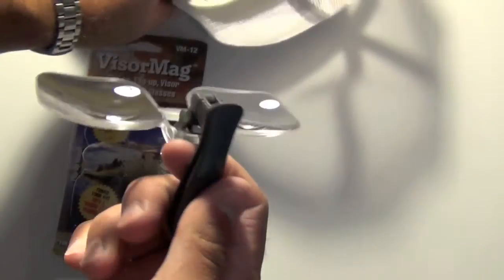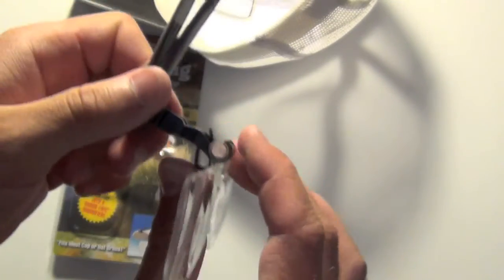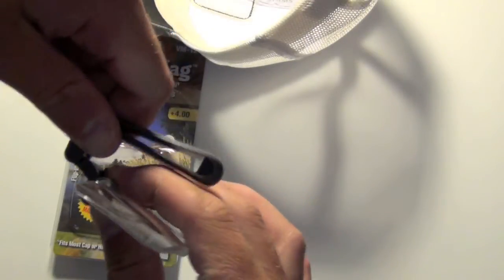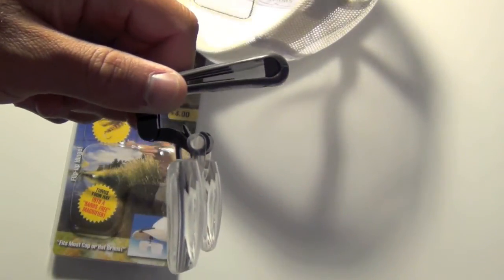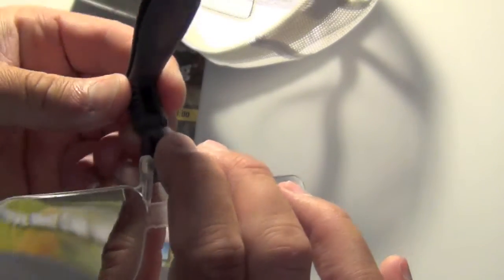They can easily be removed. They have a little swing arm here that you can swing down or swing up so they are closer to your hat so they can be adjusted.